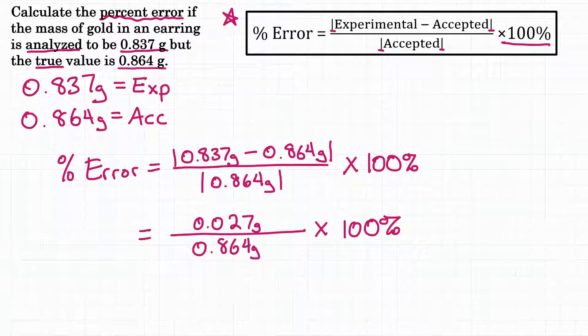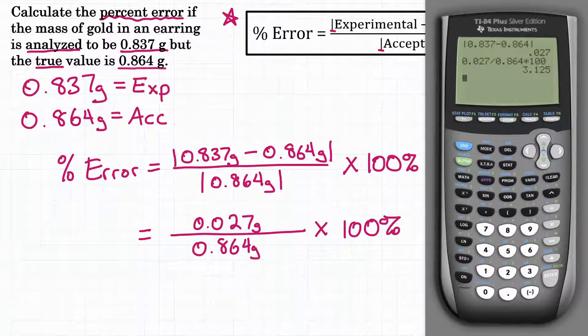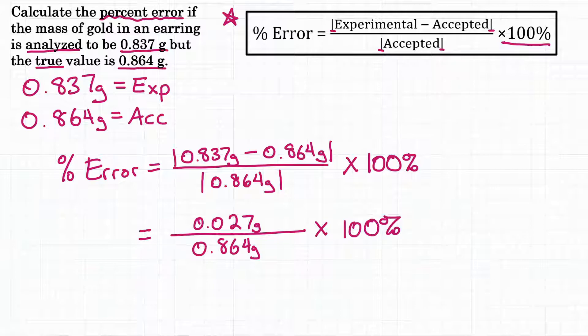Now time to solve the final answer. Let's get our calculator and plug and chug. 0.027 divided by 0.864, and then all multiplied by 100. Hit enter, and our calculator gives us 3.125. Let's round that to two significant figures, so we would get 3.1.